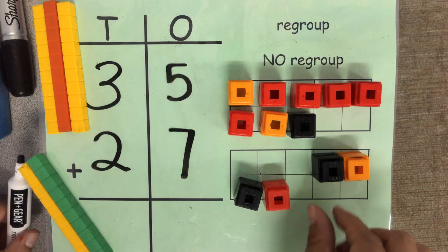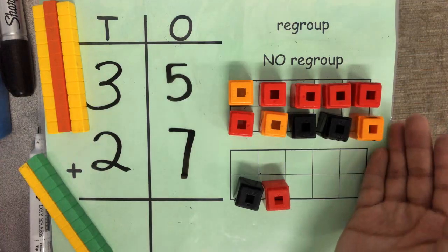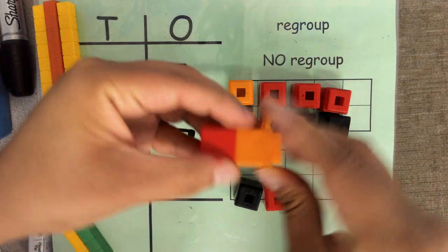Seven, eight, nine, ten. I can make a group of ten with this. If you notice, let's go ahead and make that.